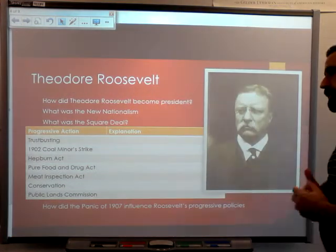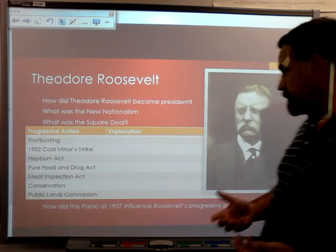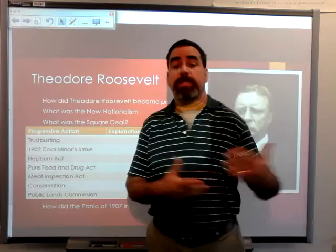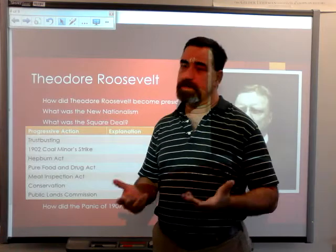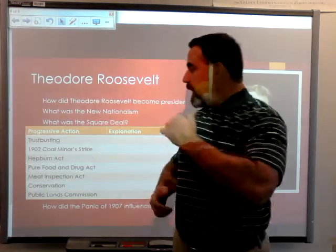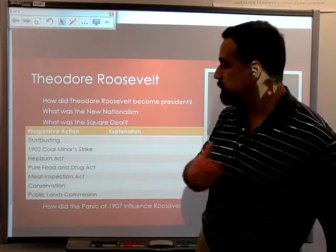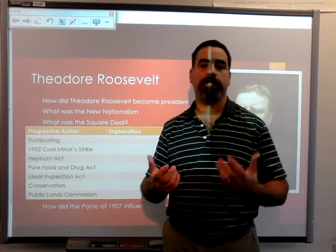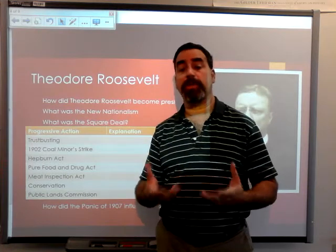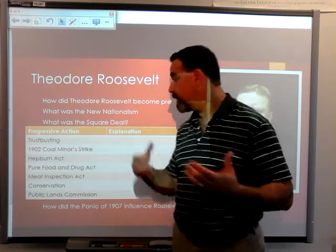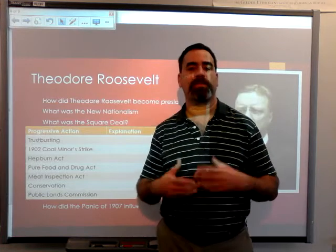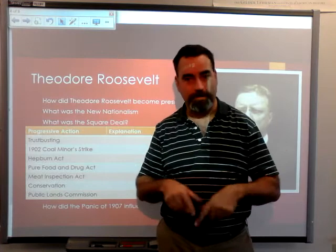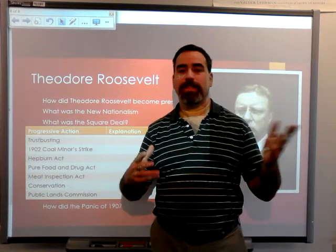In 1904, Roosevelt runs not for re-election but simply for election — he hadn't originally been elected. He runs under what he called the Square Deal, which was his campaign platform describing his New Nationalism to the American people. The idea was that all working people would get a quote-unquote 'square deal' — squares have equal sides, so it's about equality.